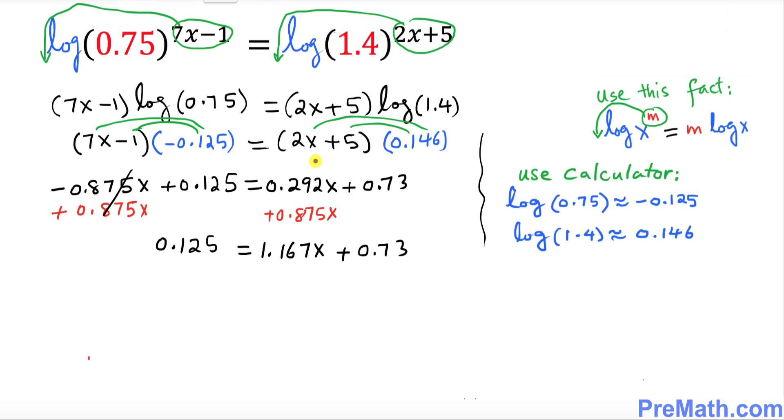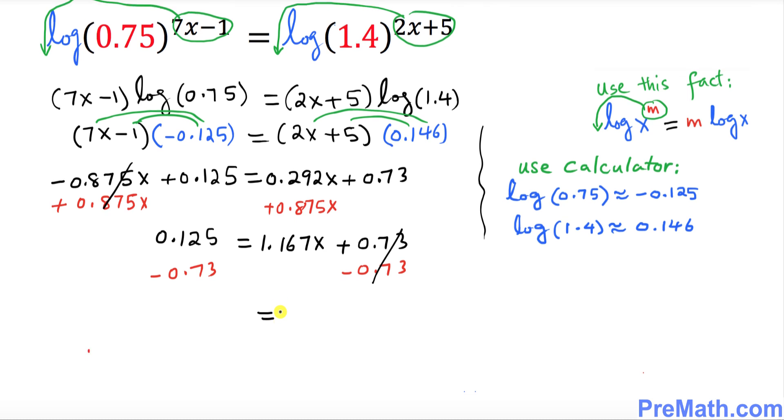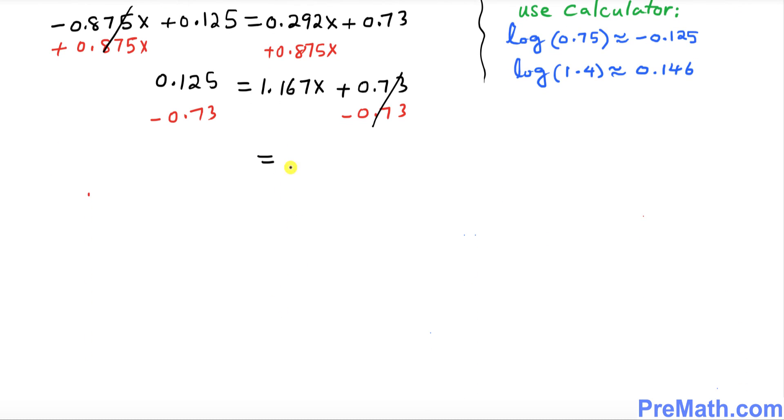Now I want you to subtract 0.73 from both sides. So this thing is gone. On the right hand side we still have 1.167x equal to once you subtract this thing that's gonna give you negative 0.605.